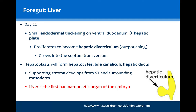Around day 22, a small endodermal thickening in the presumptive ventral duodenal area will form, more caudal to the stomach, existing as a hepatic plate. This will proliferate to become the hepatic diverticulum — a true diverticulum containing all layers of the structure it is pouching from. This hepatic diverticulum will grow into the septum transversum and form hepatoblasts that will become the hepatocytes, the bile canaliculi and the hepatic ducts. However, the supporting stroma of the liver will develop from the septum transversum and the surrounding mesoderm.